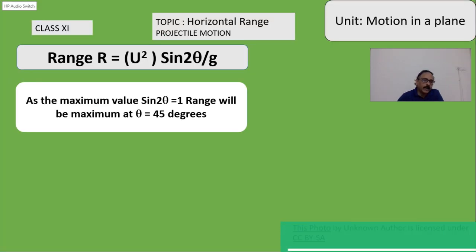The maximum value of sin θ is equal to 1. Therefore, sin 2θ must be equal to 1 to get the maximum range. So, sin θ is equal to 1, then θ becomes 90. Therefore, in this case, 2θ is equal to 90. Therefore, θ is equal to 45 degrees.